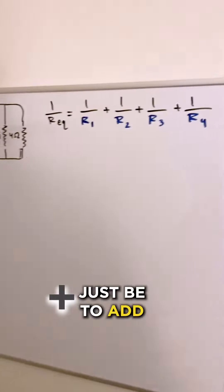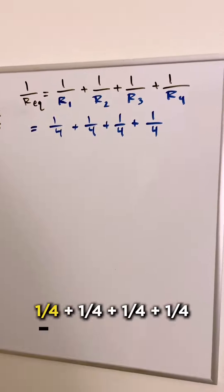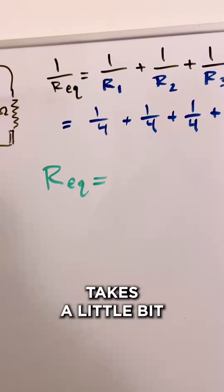A normal way of doing it would just be to add the inverse of all of the different resistors together, one over four plus one over four plus one over four plus one over four to get your answer, but that takes a little bit too long.